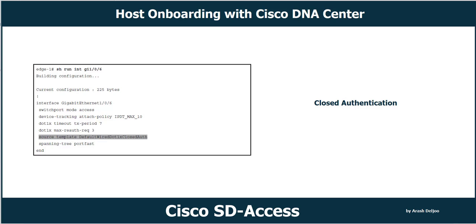The next authentication method is closed authentication, which is one of the end goals in phase 2 of 802.1x. In closed authentication, traffic is permitted only if authentication is successful. Prior to authentication, only EAPoL (Extensible Authentication Protocol over LAN) traffic is allowed. With the closed authentication template selected, the fabric edge ports are configured in closed mode with the source template 'DefaultWired_dot1x_closedAuth'.